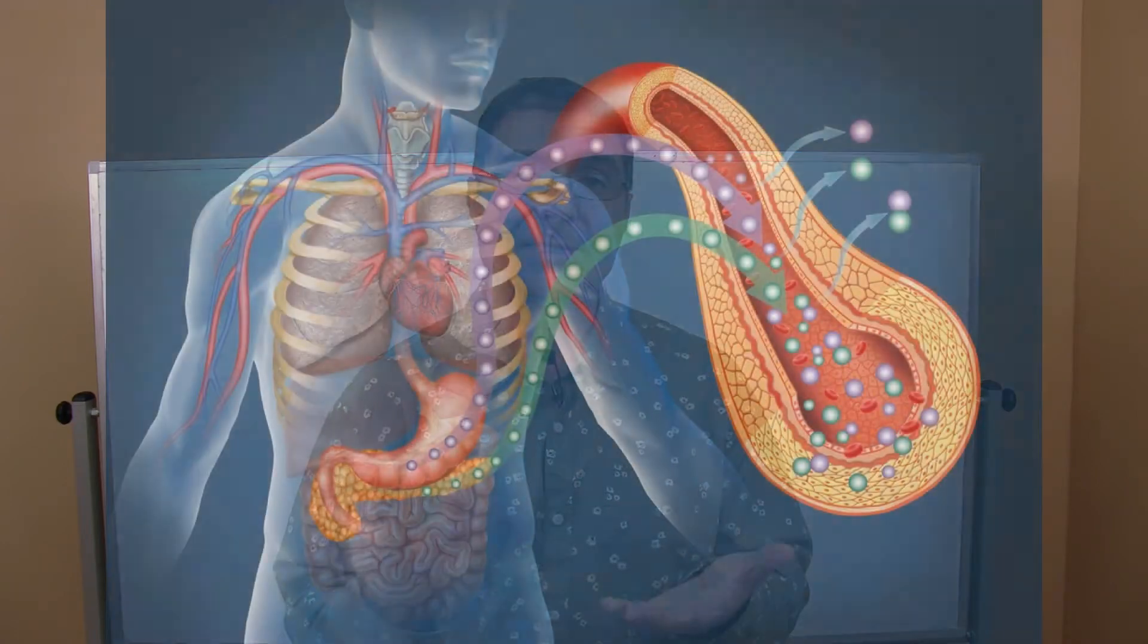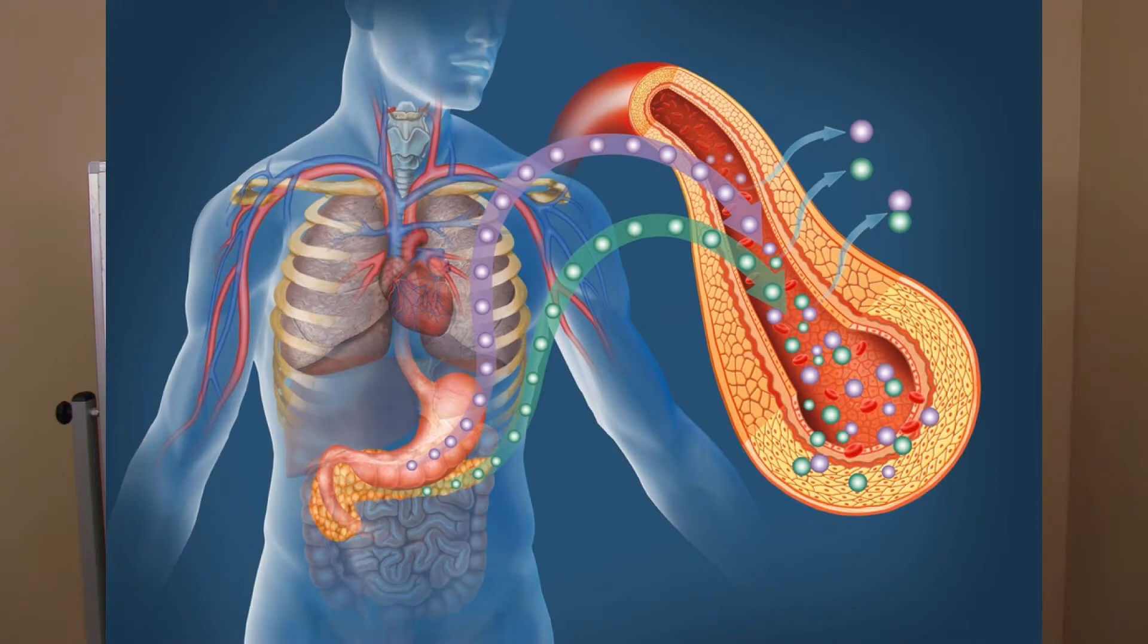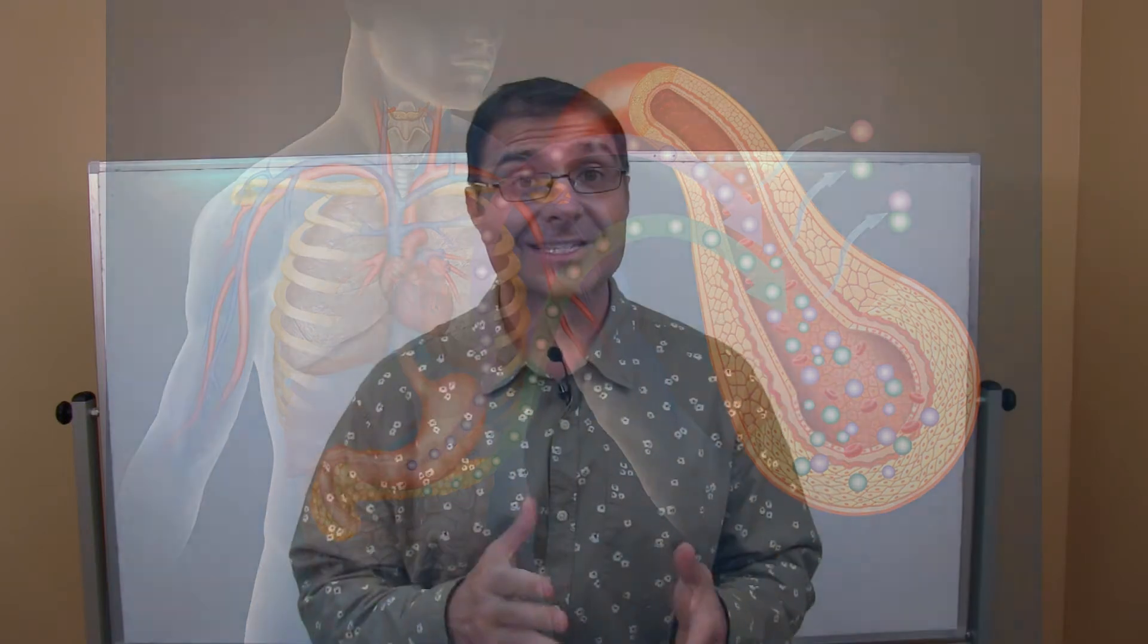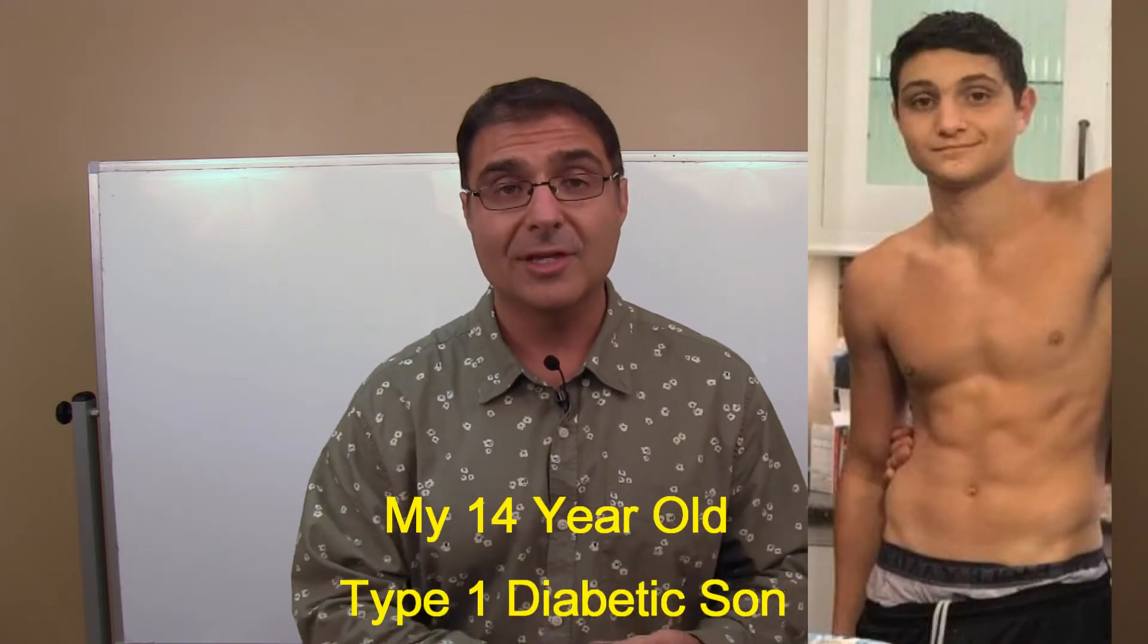Insulin is the hormone that helps you to take sugar from your blood and put it in your cell. In addition to that, insulin is also the most powerful fat-storing hormone, which is why type 1 diabetics don't usually have a problem with too much body fat. They're actually usually more on the lean side, especially if they're a type 1 diabetic athlete.